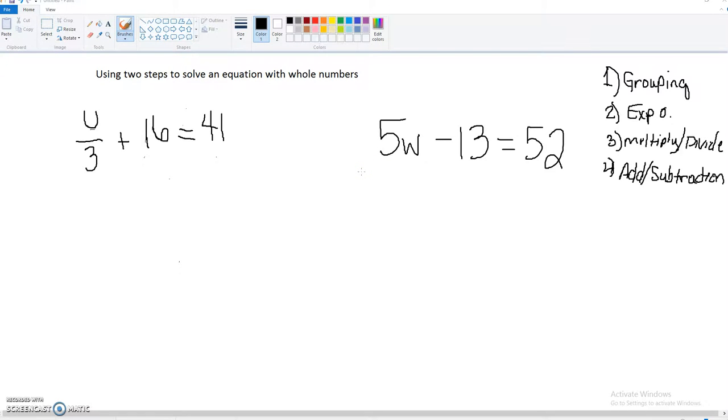Using two steps to solve an equation with whole numbers. This is the part where we're going to take the additive, or addition property, and the multiplicative property, and we're going to combine them into two steps in order to solve for the variable.